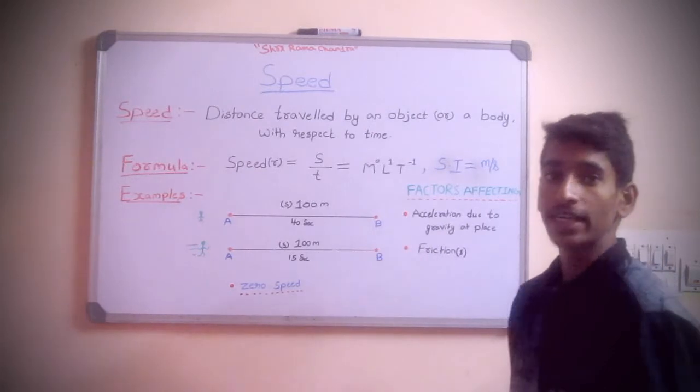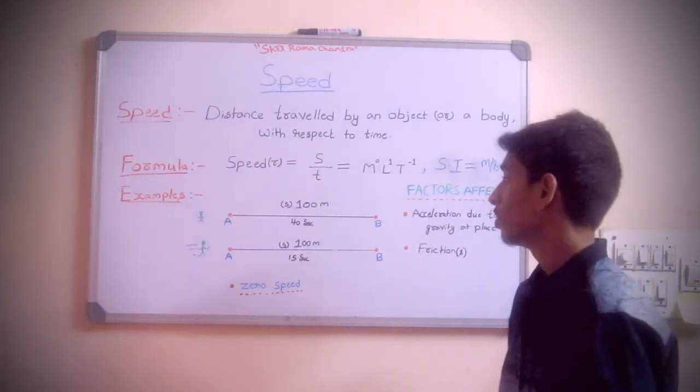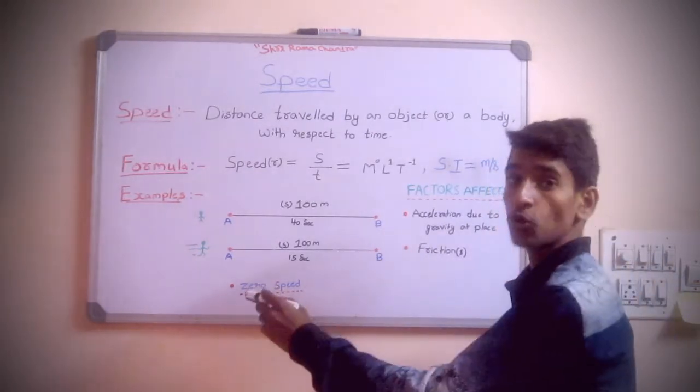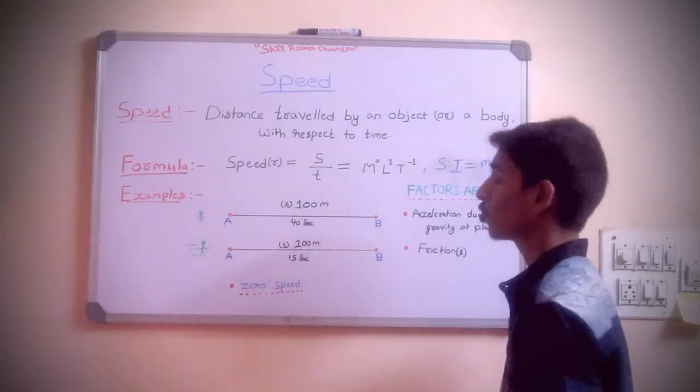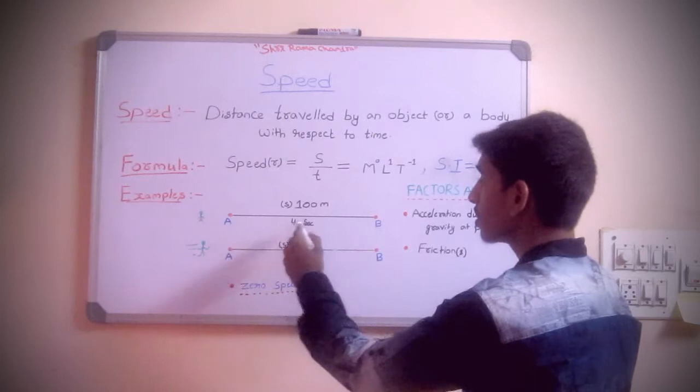To have a better understanding, I will provide two examples. Let us consider two points, point A and point B, and the distance between them is 100 meters. Let us assume a boy walks this distance in 40 seconds.